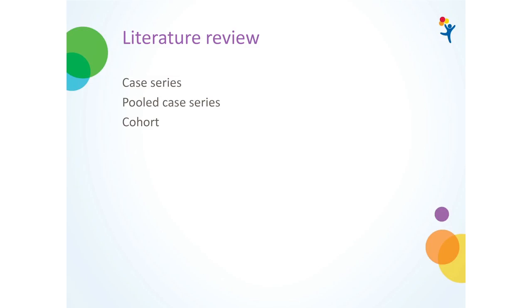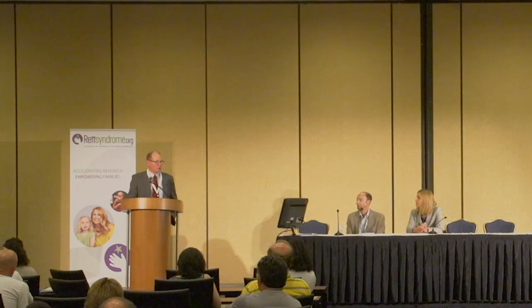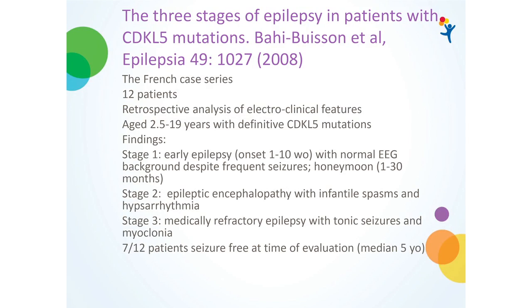The way I see it, there are case series, pooled case series, and then there are cohorts — basically as you get a little bigger, you go from a few patients to a lot more patients. The first big paper was from the French group: 'The Three Stages of Epilepsy in Patients with CDKL5 Mutations' by Nadia Bahi-Bousson in 2008. This was 12 patients, a retrospective analysis of electroclinical features in patients aged 2.5 to 19 years with definitive CDKL5 mutations.